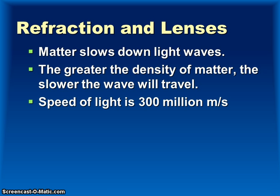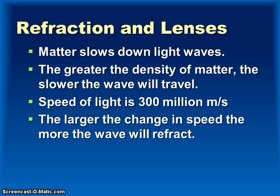The speed of light is around 300 million meters per second, or about 182,000 miles per second, which is the fastest thing we know of. The larger the change in speed, the more the wave will refract. Refraction is the bending of light as it goes from one medium or material to another. Light travels quickly through air, but once it tries to travel through glass, the wave will actually start to bend because it travels slower through that material.